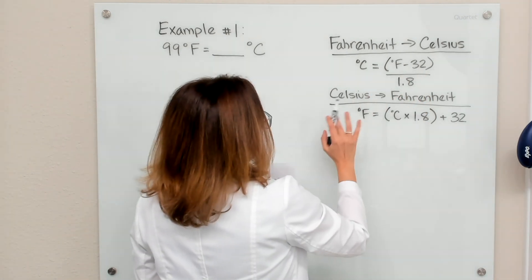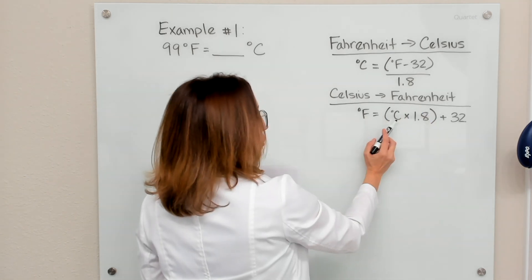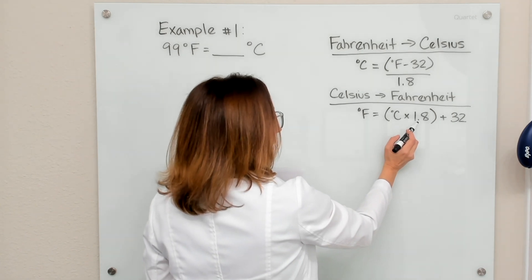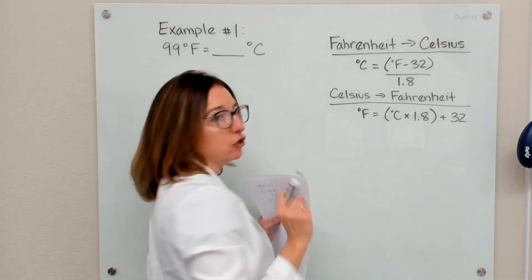And then when we're going from Celsius to Fahrenheit, you want to take the temperature in Celsius, multiply times 1.8, and then take the answer to that and add 32.